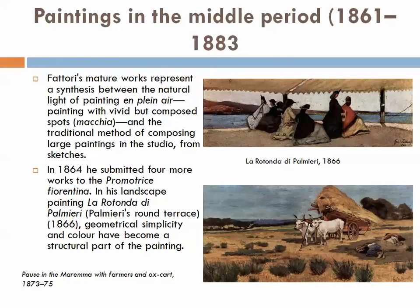What we call the middle period is the longest period of his life: 1861 to around 1883. His more mature works represent a synthesis between the natural light of plein air painting — remember, plein air means painting outdoors. These paintings are very vivid, with composed spots that are either shadowings or lightings.